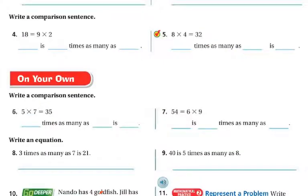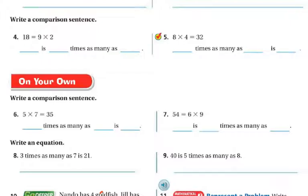Now we're going to write comparison sentences. So we have 18, remember is is this equal sign, 9 times as many 2's. Over here, we've got, there's my is again. I always like to start with equals. So we know it's going to be 32. And then it's times as many. So 8 times as many 4's is going to give me 32.